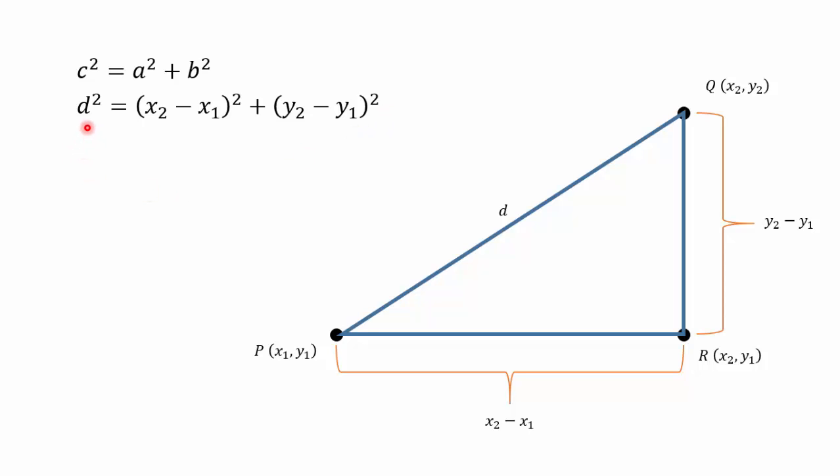We're trying to find distance, so we take the square root of both sides and we get the distance formula. There is only one answer, which is the positive square root, because distance can only be positive.